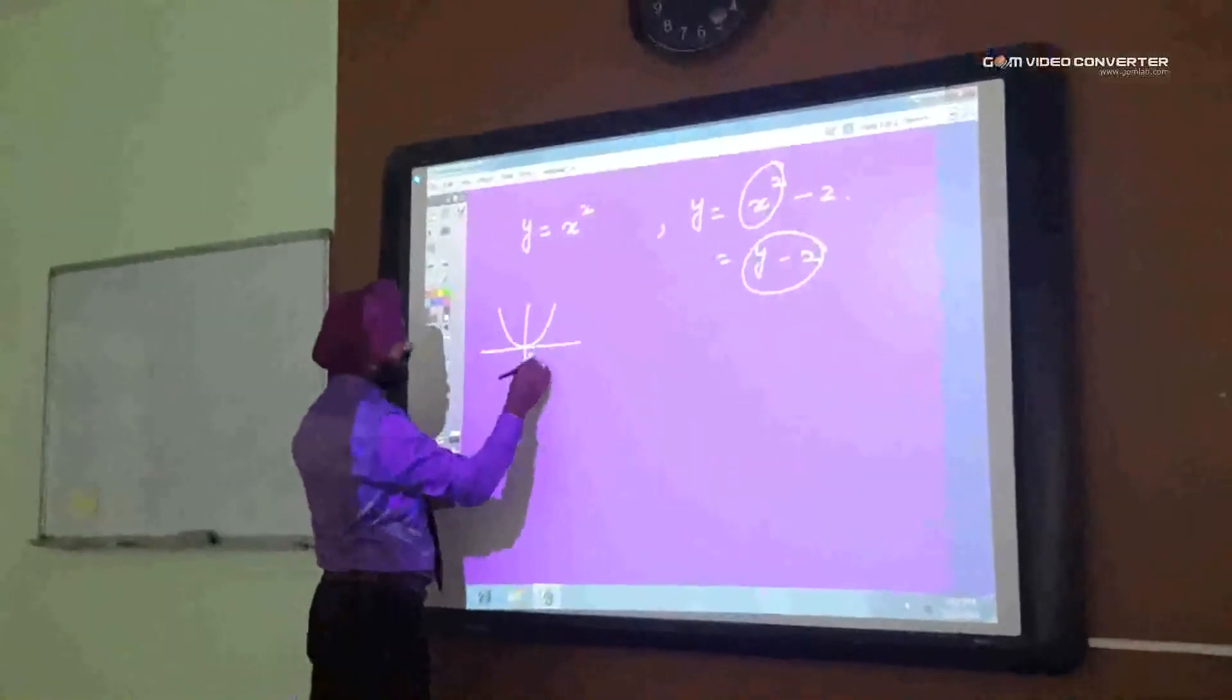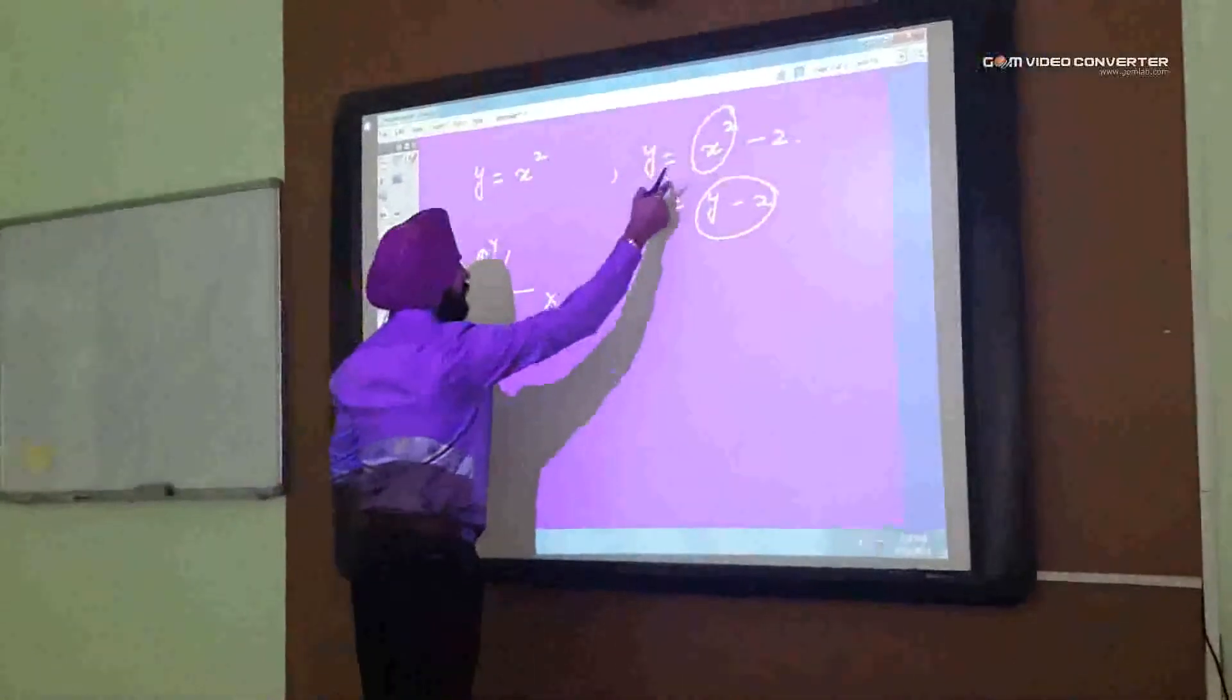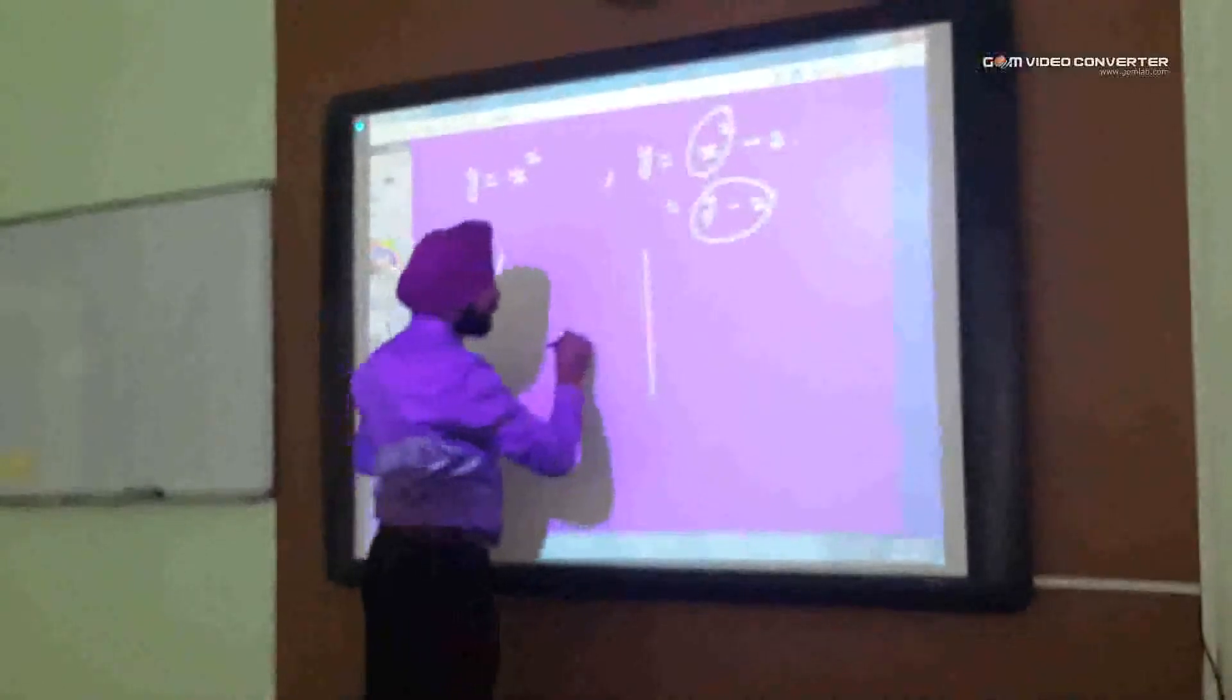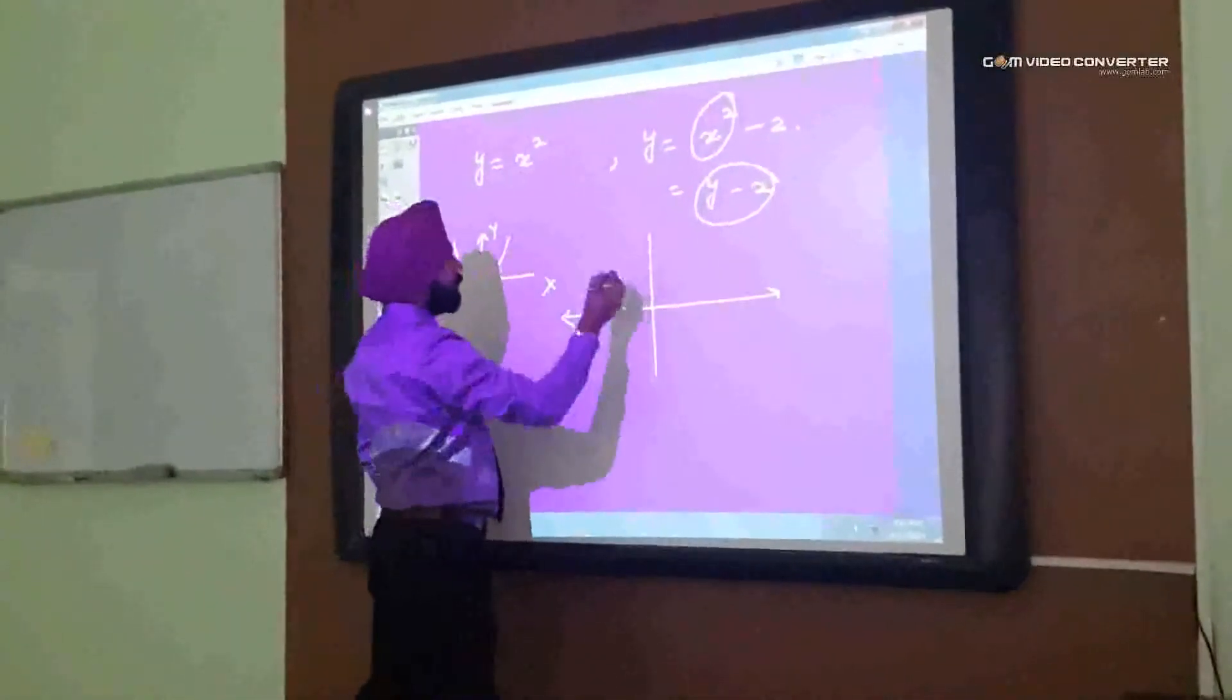So, the curve will go down. If it is 0, x axis and y axis, then for this curve, the curve would be same.